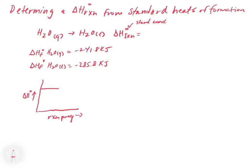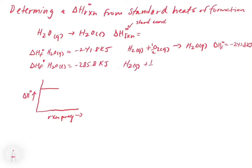The ΔHf for H₂O(g) is written as: H₂(g) + ½O₂(g) → H₂O(g), with the half-coefficient to make one mole of product. The ΔHf from the Appendix for this reaction is −241.8 kJ. For the liquid, the left side is the same elements: H₂(g) + ½O₂(g) → H₂O(l), giving ΔHf = −285.8 kJ.